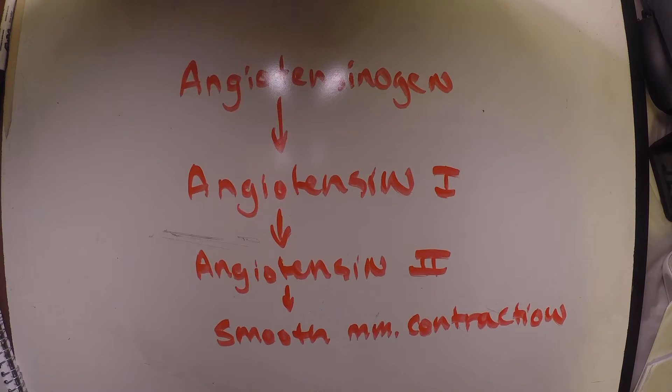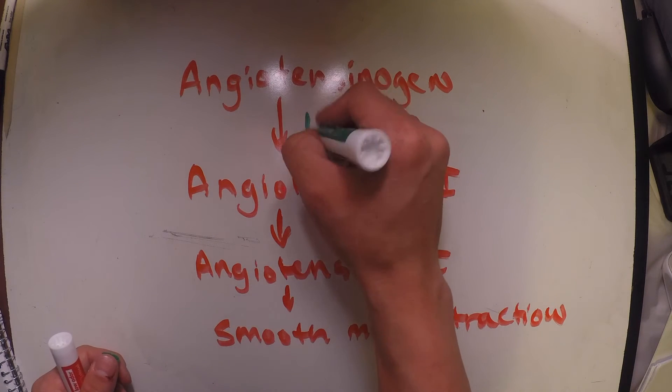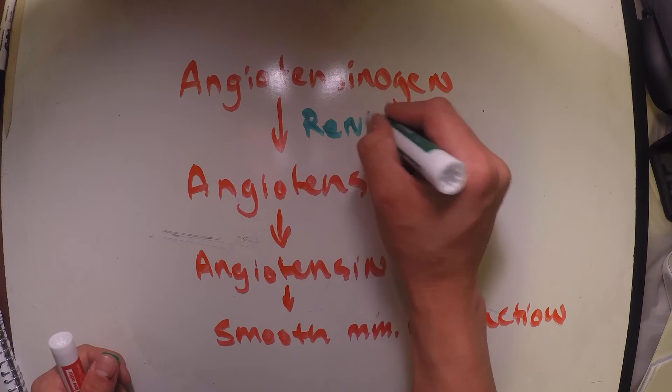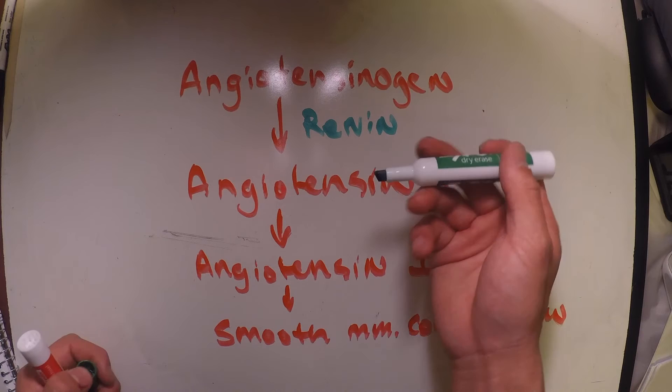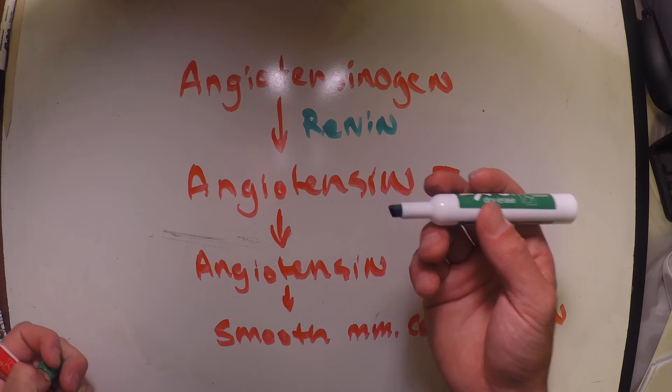Okay, so we have this large protein generated by the liver known as angiotensinogen. Angiotensinogen is going to be cut up by this protein we release from our juxtaglomerular cells known as renin. So renin is going to take this angiotensinogen and cut it up into a 10 amino acid long peptide.